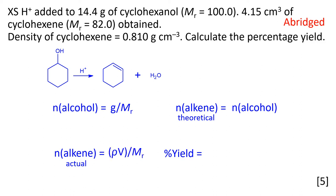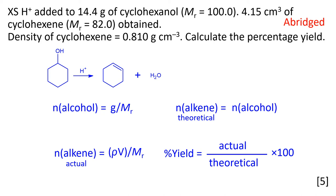The amount of the alkene that you actually get is also equal to mass divided by molar mass. Because we've got the density of the cyclohexene, we can work out the mass by using density times volume (ρV). The percentage yield is given by the equation: actual divided by theoretical, multiplied by 100. You can use amounts of substance in moles or mass in grams, as long as you're consistent.